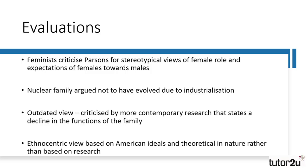A second criticism of Parsons is his explanation of the evolution of the nuclear family. Laslett found evidence by looking at parish records of the existence of the nuclear family in the pre-industrial era, while later research by Wilmott and Young demonstrated the existence of extended kinship networks in East London in the 1950s. Parsons has also been criticised for having an outdated view of society, though given he was writing over 60 years ago, this is to be expected. More contemporary research shows the extent to which the family has lost some of its traditional functionality, replaced by other institutions. Finally, Parsons has been criticised for ethnocentrism, focusing solely on American ideals, while his work is theoretical rather than empirical in nature, meaning there was little research to back up his findings.